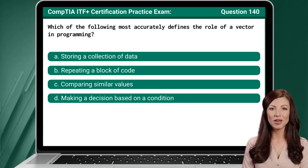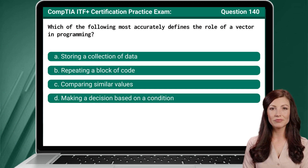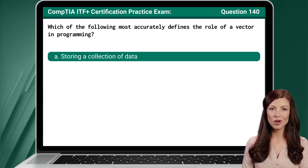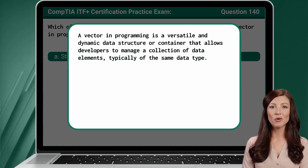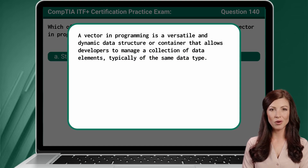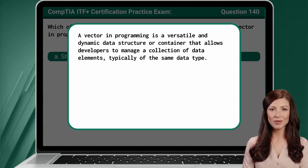Question 140. Which of the following most accurately defines the role of a vector in programming? The answer is A — Storing a collection of data. A vector in programming is a versatile and dynamic data structure or container that allows developers to manage a collection of data elements, typically of the same data type.